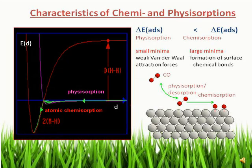This slide shows the difference between chemisorption and physisorption on the basis of a potential energy diagram. The ΔE for the physisorption process is less than for chemisorption. Physisorption has a small energy minimum due to weak van der Waals attraction forces, while chemisorption has a large energy minimum due to formation of surface chemical bonds. The second picture shows how CO is adsorbed in physisorption versus chemisorption on the adsorbent surface.